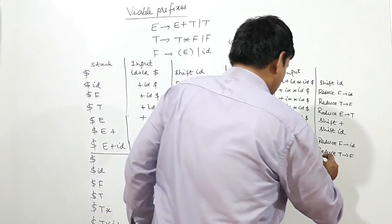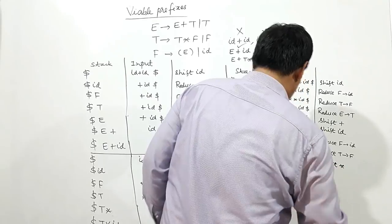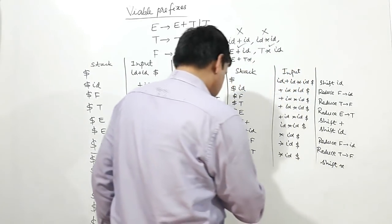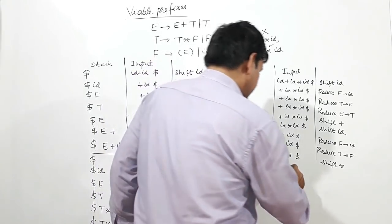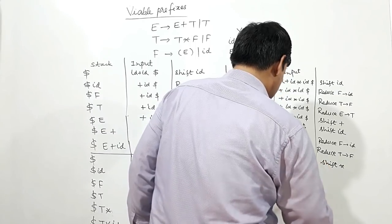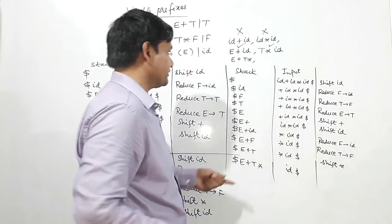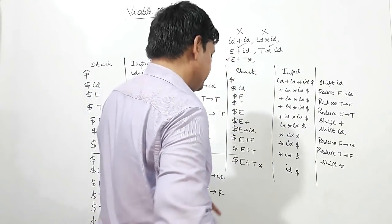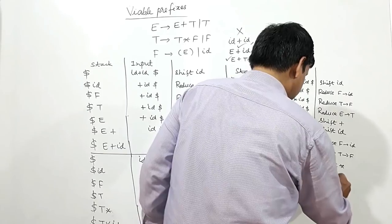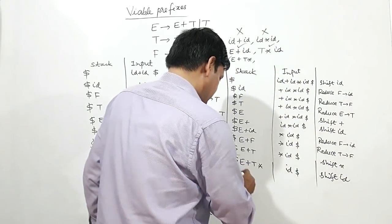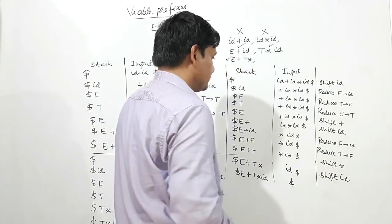So I will shift star: dollar E plus T star, ID remaining, dollar. I can check here — E plus T star is appearing on the stack, so this is a viable prefix. I shift ID onto the stack: dollar E plus T star ID, nothing remaining on input.